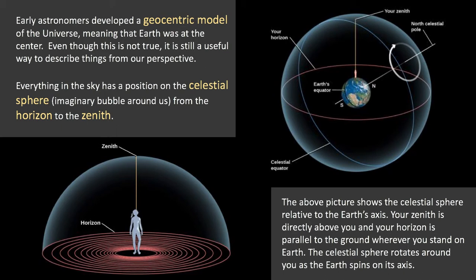So let's take a look at the image at the bottom here. We have a person standing on the ground. Their horizon is the line parallel to the ground, as far as they can see. And their zenith is the point directly overhead. This bubble around them we call the celestial sphere. So it's an imaginary bubble that surrounds you. Your zenith is particular to you and where you are standing on the Earth. It's always your point directly overhead.